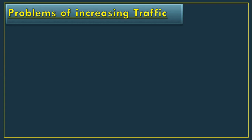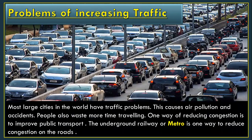Problems of increasing traffic. As we all know, most large cities in the world have traffic problems. This causes air pollution and accidents. People also waste more time in travelling. So one way of reducing congestion — congestion means bheerbhaar — is to improve public transport. If public transport is fast and efficient, fewer people will use their own vehicles.